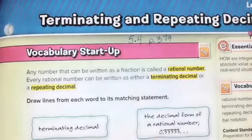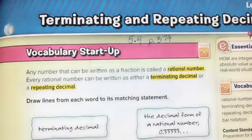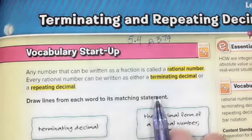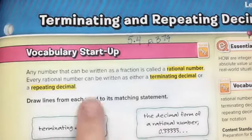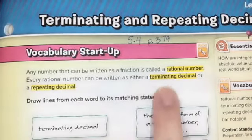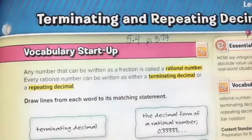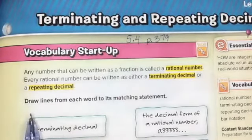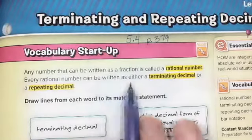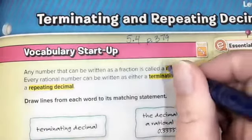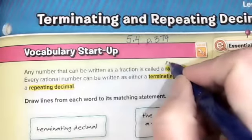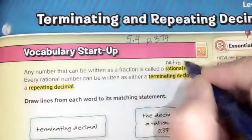Any number that can be written as a fraction is called a rational number. Every rational number can be written as either a terminating decimal or a repeating decimal. We're not looking at non-terminating, non-repeating decimals in sixth grade.